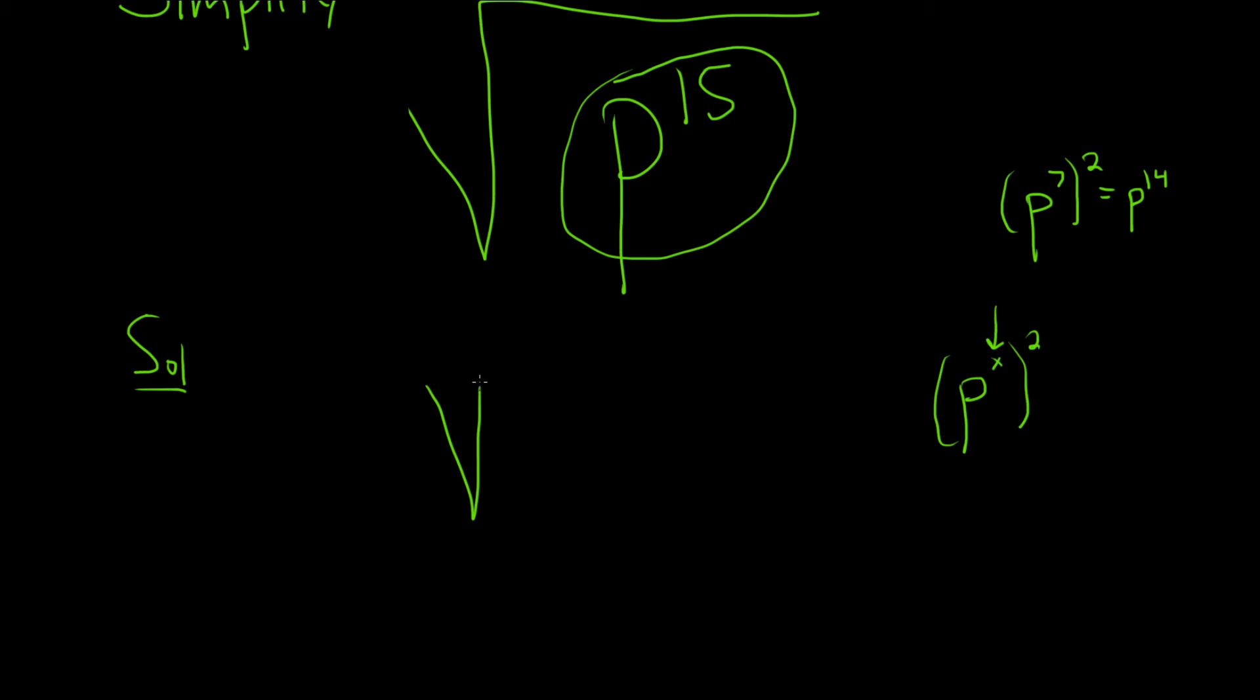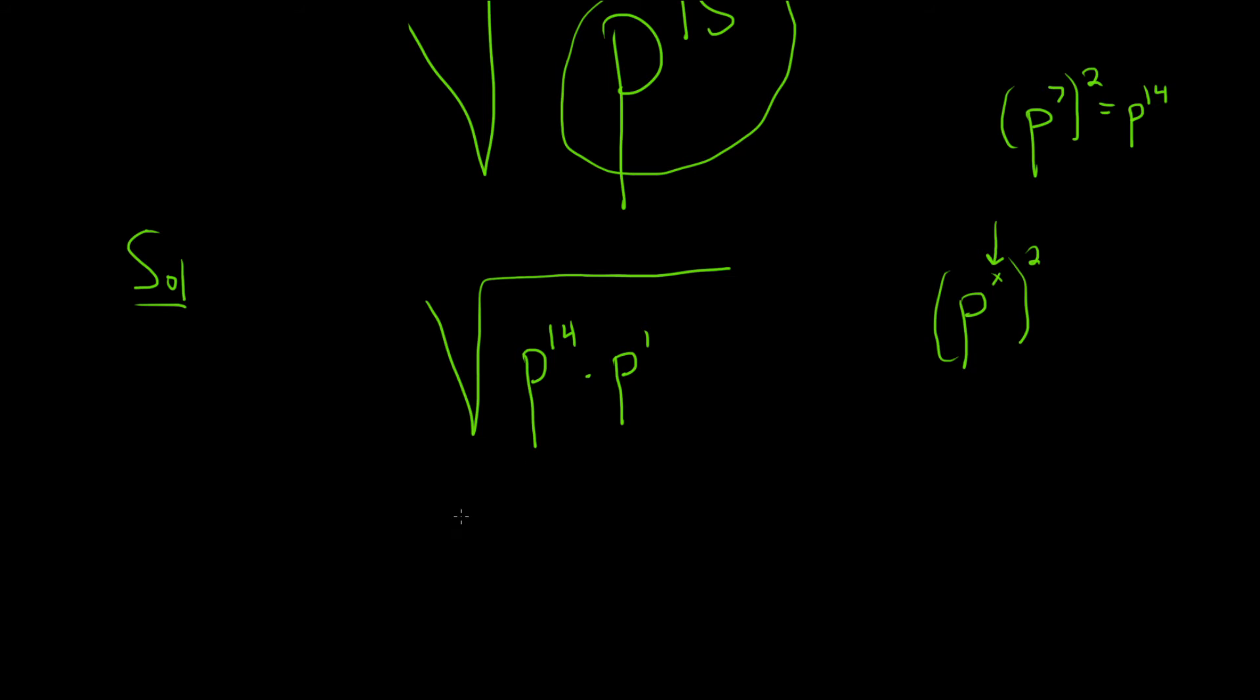So the idea is we'll break this up as p to the 14 times p to the 1. And now we can write this first piece as what's called a perfect square. We can write this as p to the 7 squared times p to the 1.